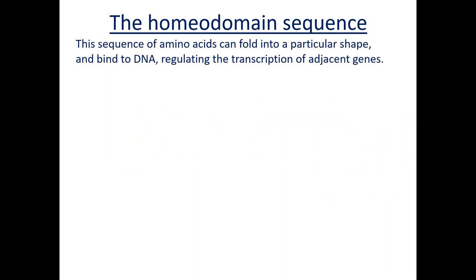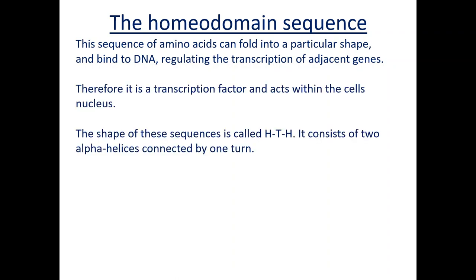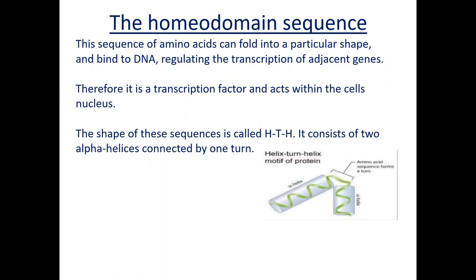The homeodomain sequence — so this is the 60 amino acids, the part of the protein — this sequence of amino acids can fold into a particular shape. And obviously that shape will be dependent on the rest of the protein and all the different bonds that are formed to make the tertiary structure. The key idea is it will have a specific shape, and that shape can bind to DNA, can bind to promoter regions, and enhance regions of the DNA, which regulate the transcription of adjacent genes. The homeodomain sequence — that part of the protein — is binding and therefore acting as a transcription factor. It does have a very specific shape: the homeodomain sequence is what we call a HTH — two alpha helices, connected by just a little turn. So helix-turn-helix, HTH.